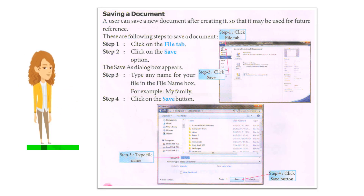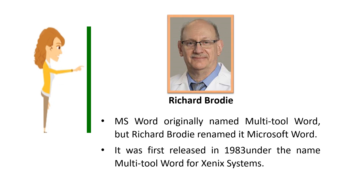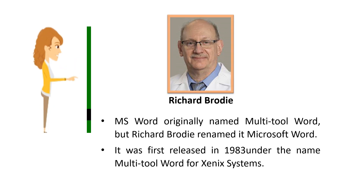Saving a Document: A user can save a new document after creating it so that it may be used for future reference. Steps to save a document: Step 1: Click on the File tab. Step 2: Click on the Save option. The Save As dialog box appears. Step 3: Type any name for your file in the File Name box. Step 4: Click on the Save button. MS Word was originally named Multi-Tool Word, but Richard Brody renamed it Microsoft Word. It was first released in 1983 under the name Multi-Tool Word for Xenix systems.